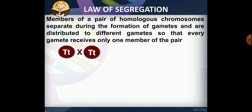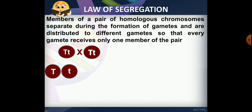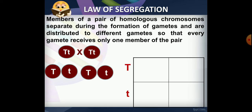This is a self-cross. During gamete formation, the homologous chromosomes separate. This process is explained in detail in the video on meiosis.